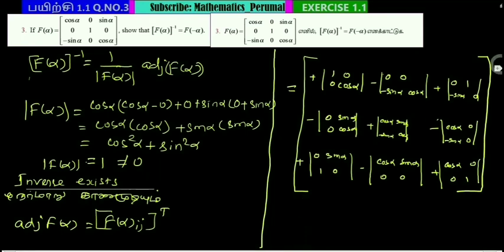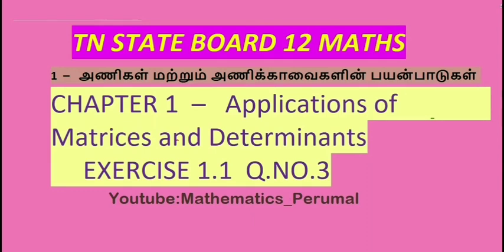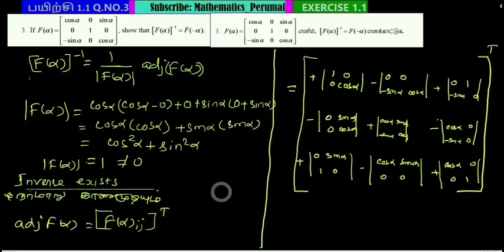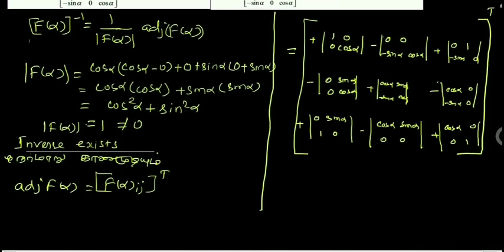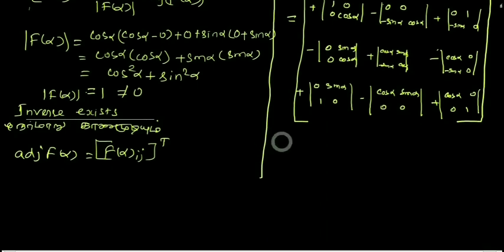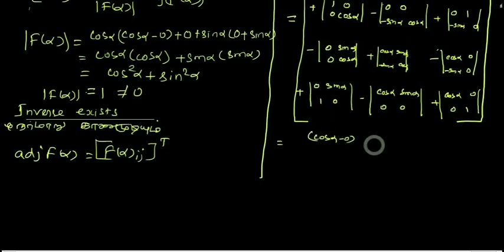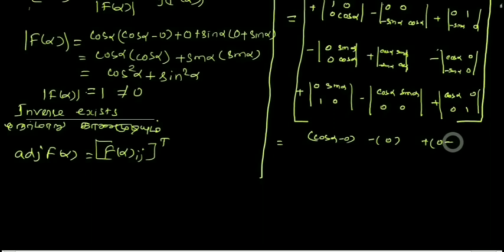So now I will simply expand row by row. For the first row simplification: nothing plus 1 into cos alpha, cos alpha, minus of 0 minus 0, total 0, plus 0 into 0, then 0 minus of minus sin alpha into 1, so minus 1 plus sin alpha.